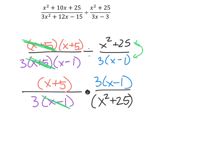We can see that we have an x minus 1 here and an x minus 1 there, but also a 3 that we can cancel out in both the numerator and denominator.